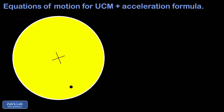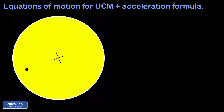This is the third and final video in a short series on uniform circular motion kinematics. In this video we're going to derive the equations of motion for an object in uniform circular motion, then we're going to derive the famous formula v squared over r for the centripetal acceleration.